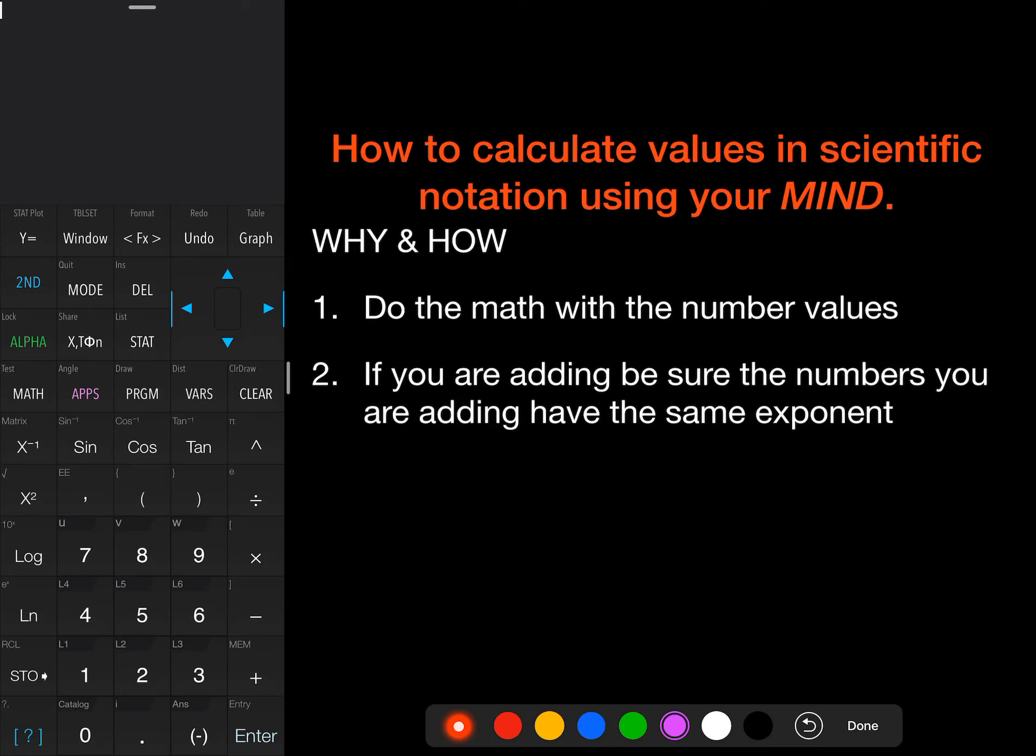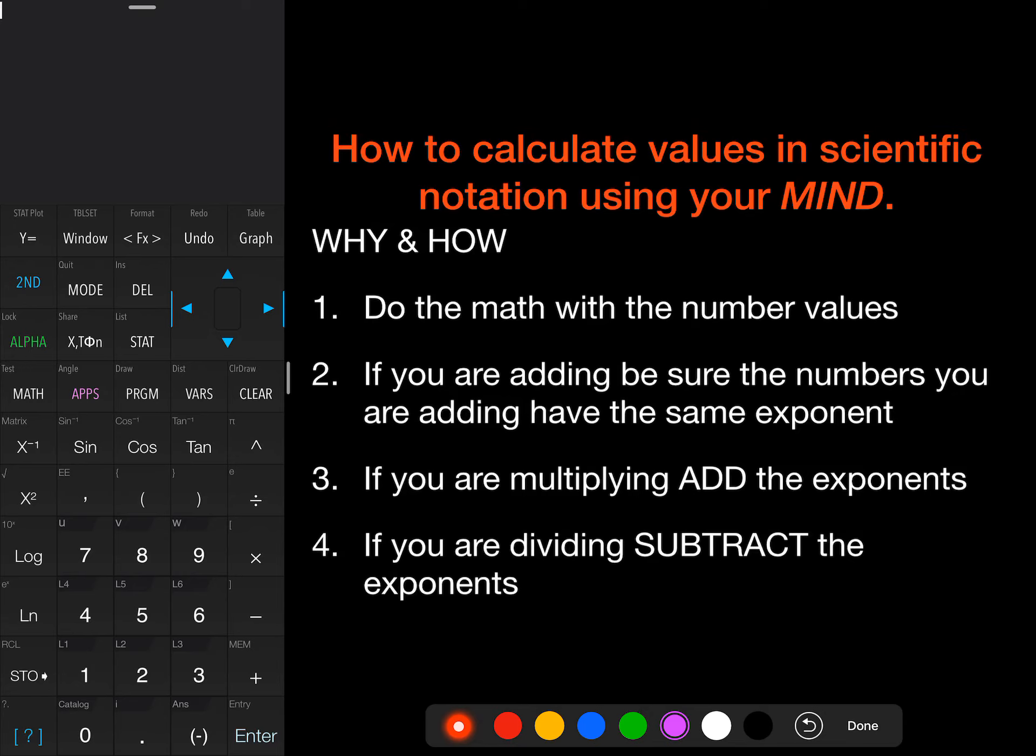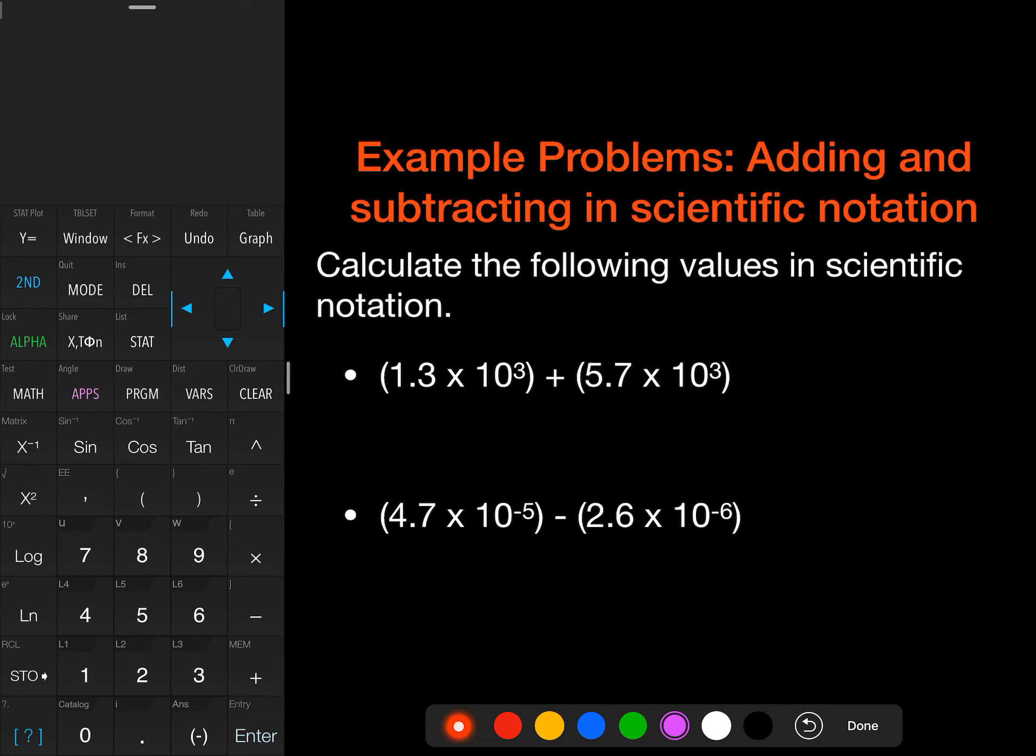And so the way that we do that is we do the math with the actual number values. And then if we're adding, we want to be sure that our numbers that we're adding have the same exponent value. And so we can move our decimal to get those in the same exponent value if they're not. Same thing goes for if you're subtracting. If you're multiplying, you want to add the exponents. And if you're dividing, you want to subtract the exponents. So that's kind of the general rule of thumb. I'm going to try to explain briefly how to do that with a couple of examples so you can see how we do that. It's really important if you are in AP chemistry to know how to do this because on the multiple choice portion of the test, you do not get a calculator.